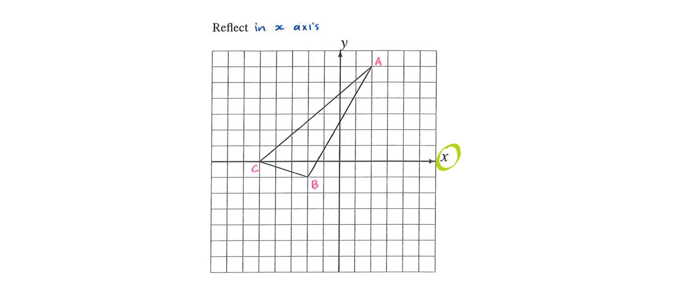And any time the shape crosses over the mirror line, it makes it a little bit awkward. Also, you'll notice that this particular point, point C, is right on the mirror line. And that is a special location for points to be.